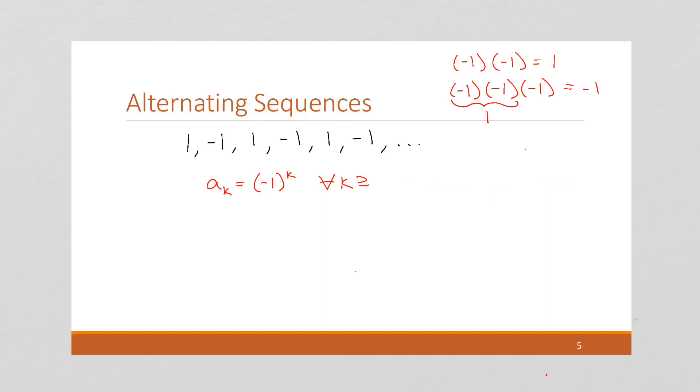So instead, since we want to start with a positive number, we're going to need to start with an even number. So we could start at k equals 0. We could start at k equals 2, k equals 4, anything we want.